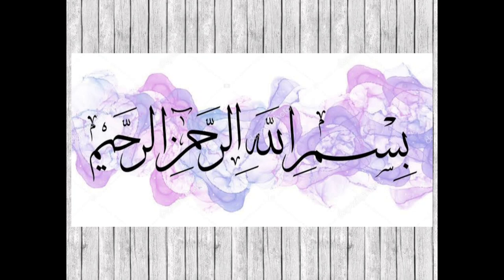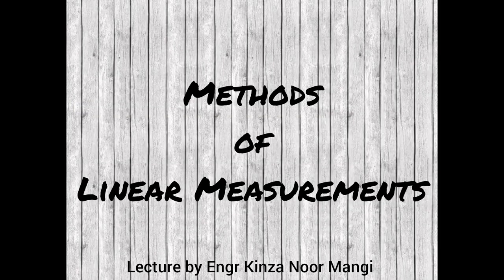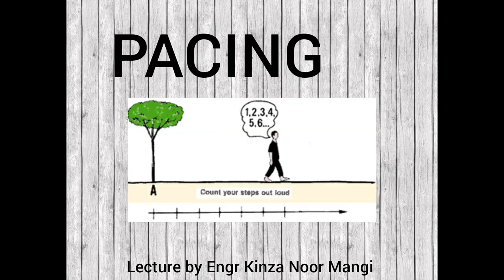In the name of Allah, who is the most gracious and most merciful. In this lecture we are going to learn about different methods for measuring linear measurements. The first method is pacing or stepping — basically for rough or speedy work, distances are measured by pacing, by counting the number of walking steps of a person. The walking step of a man is considered about 2.5 feet or 80 centimeters. This method is mostly used in the reconnaissance survey of any project.